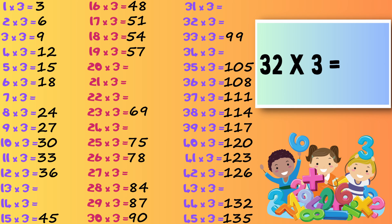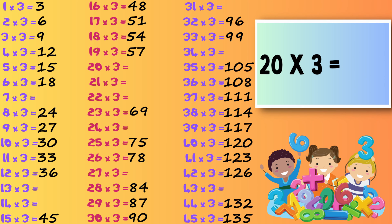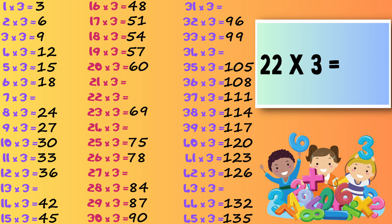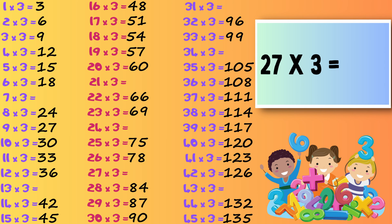Thirty-two times three — ninety-six. Twenty times three — sixty. Fourteen times three — forty-two. Twenty-two times three — sixty-six. Twenty-seven times three — eighty-one.